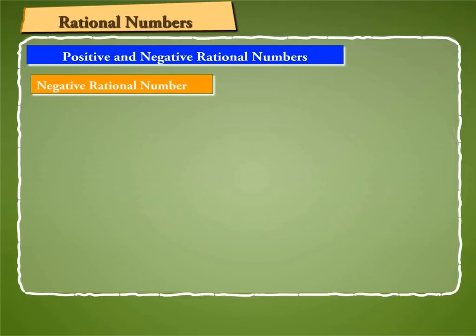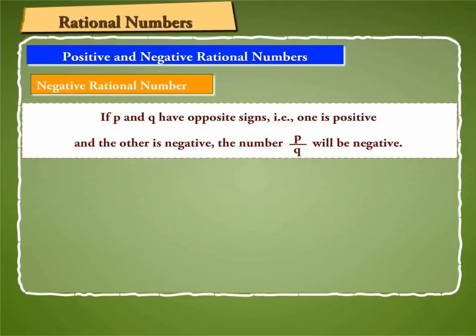On the other hand, if P and Q have opposite signs, that is, one is positive and the other is negative, the number P by Q will be negative. Example: